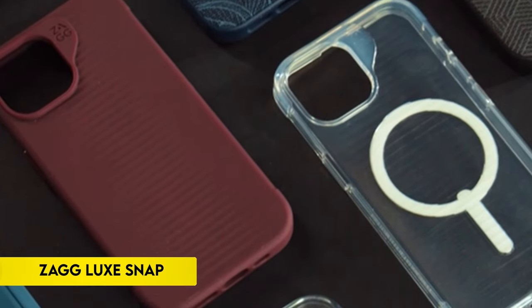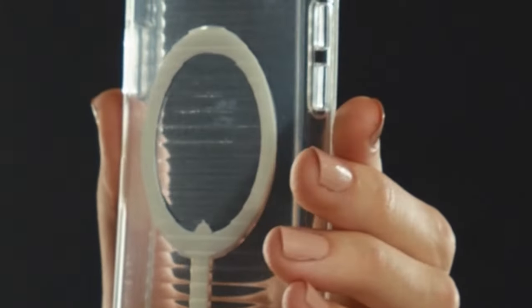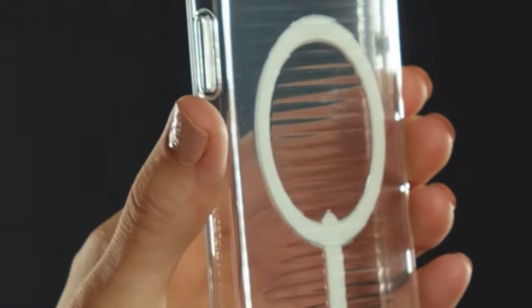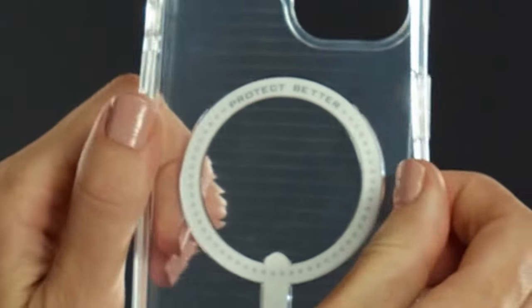On number 1, ZAGG Luxe Snap. With a drop resistance of up to 10 feet, 3 meters, the ZAGG Luxe Snap case for iPhone 15 models is a sturdy phone accessory made of one of the hardest materials on the planet, graphene.